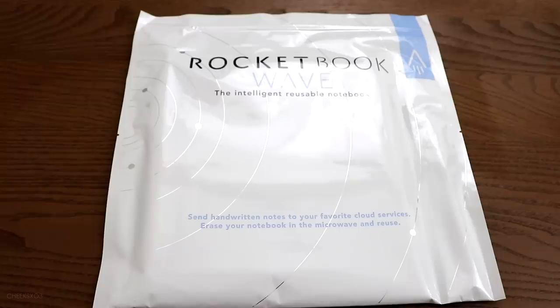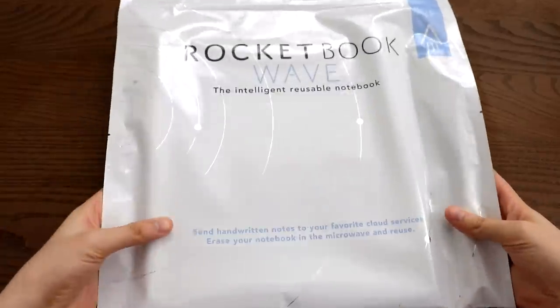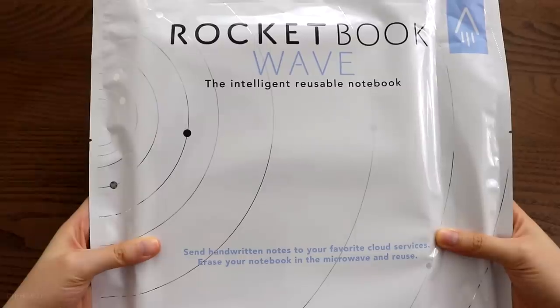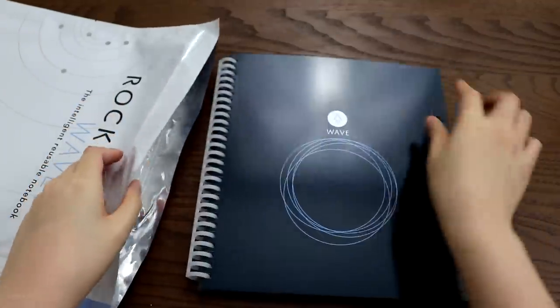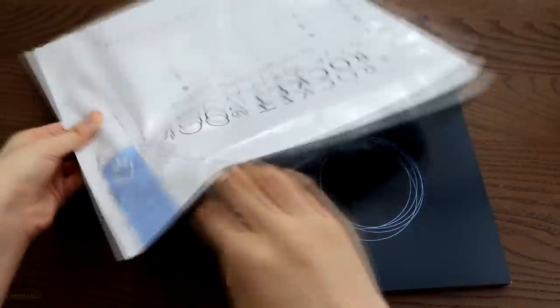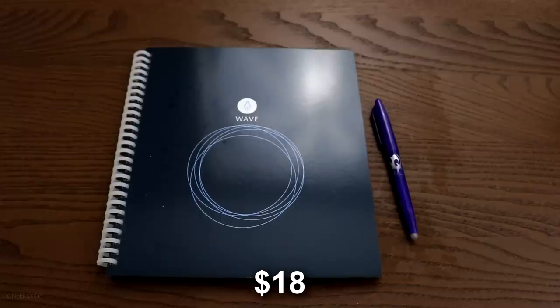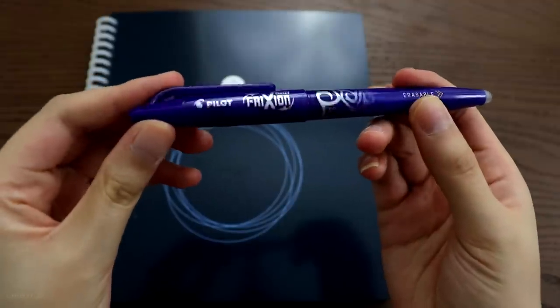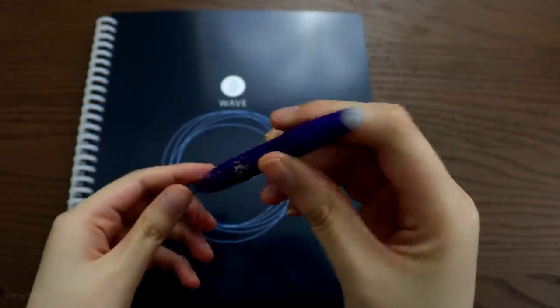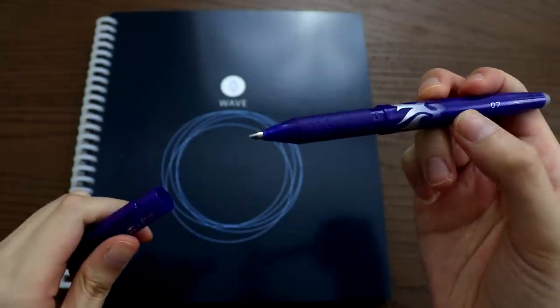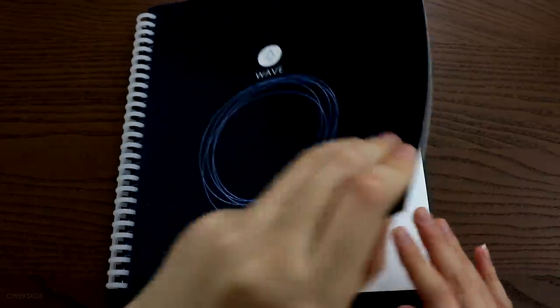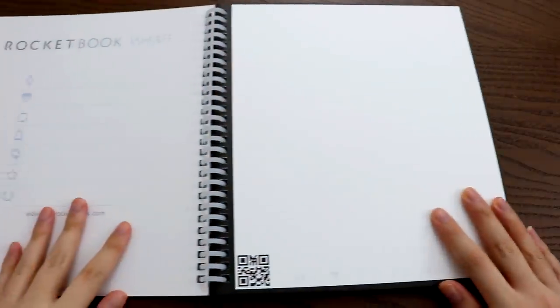This is a reusable notebook, so this is called the Rocketbook Wave Smart Notebook. In case you're wondering, I got it for $18, it was on sale by the way. It also came with a friction pen. I've tested the highlighters from this brand before and they are awesome, they're erasable. Every page has these gridded dotted lines and they also have a QR code that is used to scan to your phone or any device.